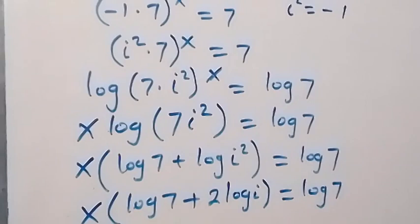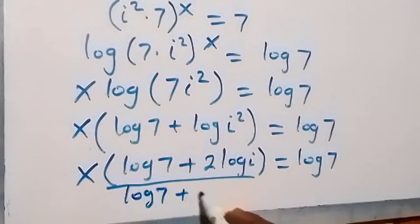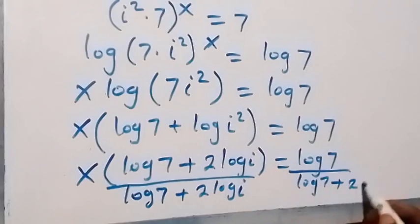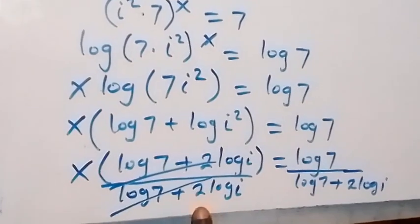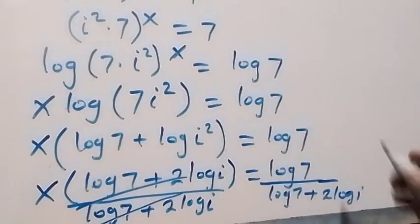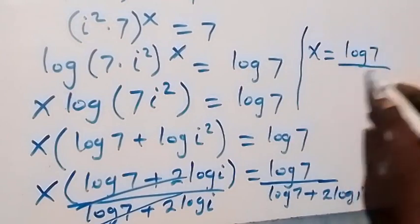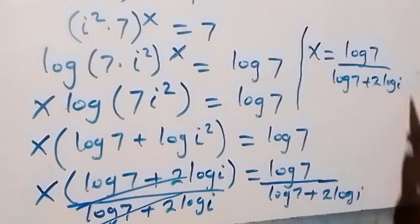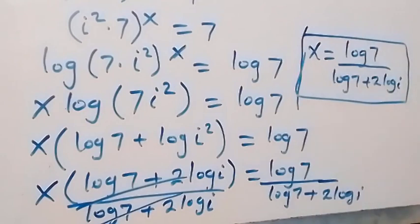Dividing both sides by (log 7 + 2·log i), x cancels on the left, and we are left with x equals log 7 over (log 7 + 2·log i). Using natural log we got the first result, and using common log we got this second result — those are the two ways to solve this problem.